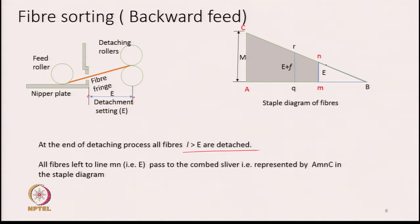On the staple diagram — shown as a simplified triangle — the detachment setting E is represented by line Mn. All fibres on the left of Mn pass to the comb sliver, represented by area AMNC. The fibres on the right side of Mn will be part of the noil, represented by area MnB.